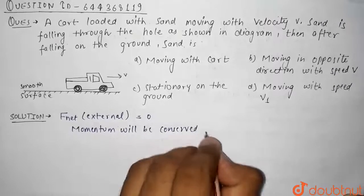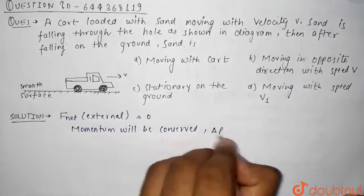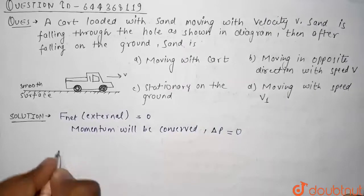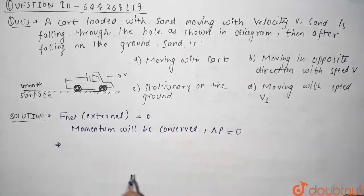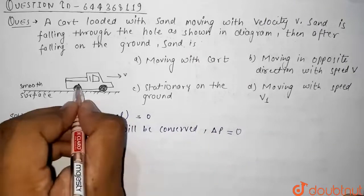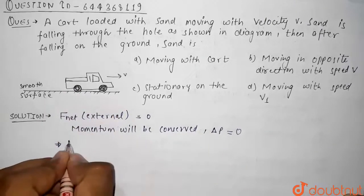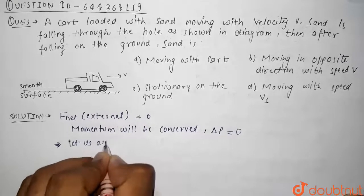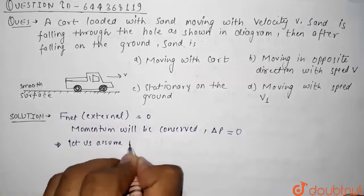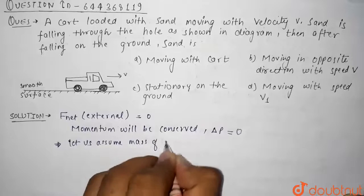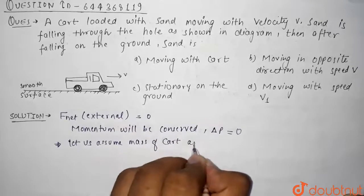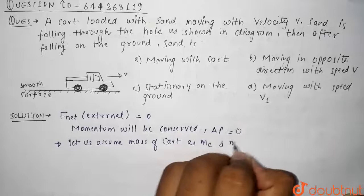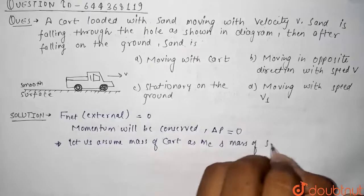Since momentum is conserved, we can say that change in momentum, that is delta p, is equal to zero. So if we conserve momentum, initially let us assume that mass of cart is mc and mass of sand as ms.